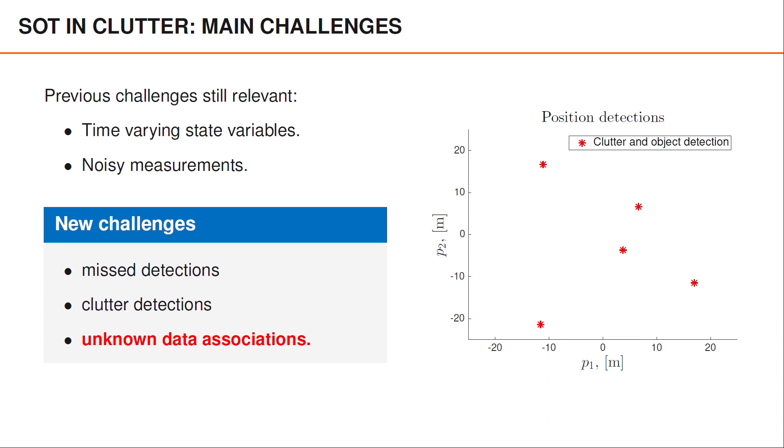But even without that, I think some of you might have been able to guess which detections pertain to the object, since the clutter detections generally jump around much more over time. And it's difficult to find a sequence of clutter detections that looked like it could be a sequence of object detections.